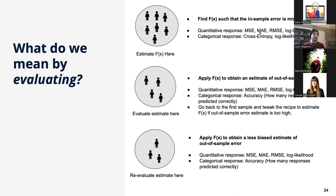Once you got mostly the right answer in the second dataset, draw a third dataset and try it there too. Why? In the first sample where you fit f(x), you're minimizing the in-sample error. No matter what algorithm you picked, it will try to minimize some measure of error in that sample. For a quantitative response, one widely used approach is to minimize the squared error: plug a value x, get a prediction y, compare to the actual y in the data, take the square of the difference, do this for each observation, and take the average — the mean squared error. Find the parameters that minimize that.